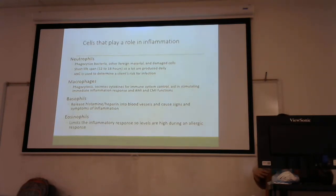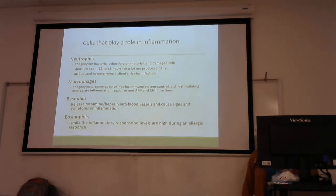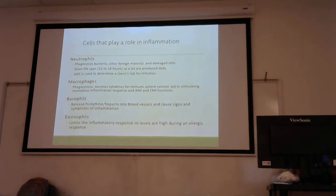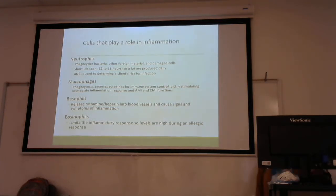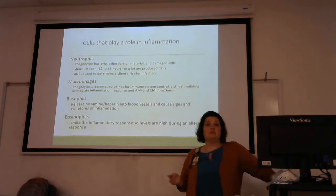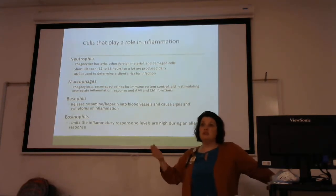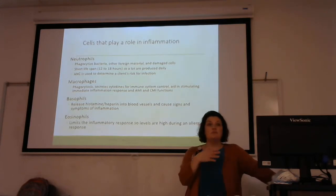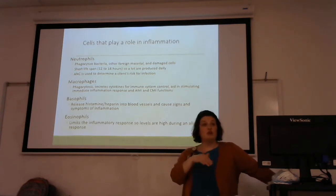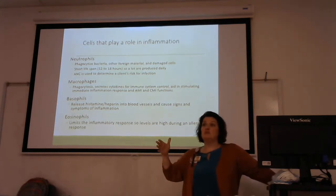When looking at an ANC level, the normal range on a lab report is 1.5 to 8 — that's 1,500 to 8,000. The higher the number, the greater resistance to infection that person has. The lower the number, the more likely they are to develop an infection. We use this for people we think are at risk for sepsis, or who come in with wounds that aren't healing. If someone has a lower ANC level, I need to be more aggressive in my interventions because they have a greater potential for developing an infection.